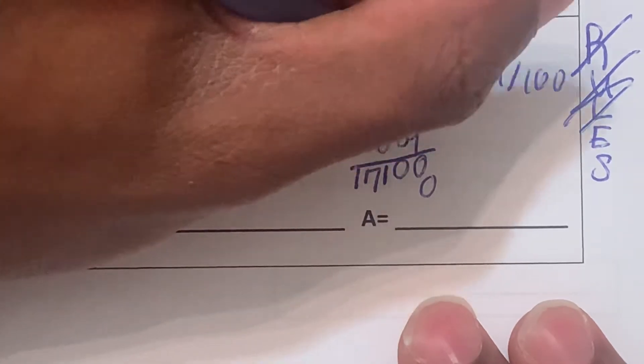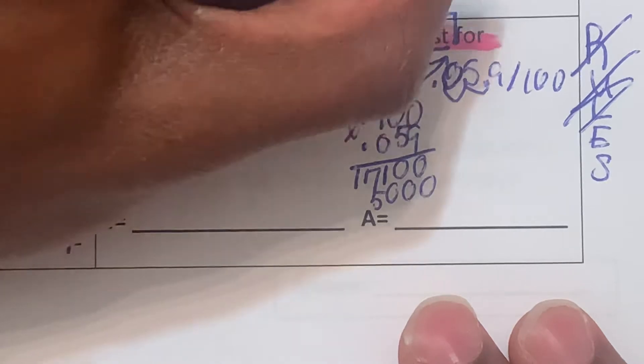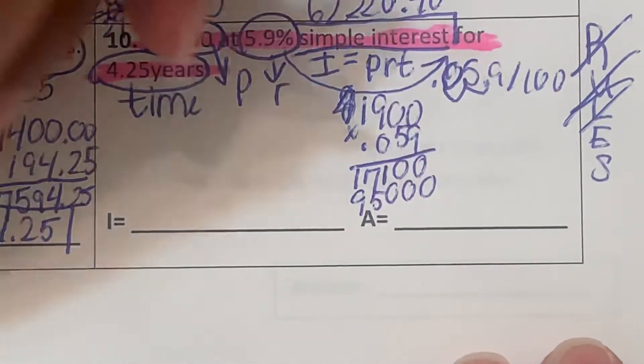9 times 0 is 0, 9 times 0 is 0, 9 times 0 is 0, 9 times 9 - those are numbers. 9 squared is 81, carry the 8. 9 times 1 is 9, plus 8 is 17. Put a 0 in the thousandth place. 5 times 0 is 0, 5 times 0 again is 0, 9 times 5 is 45, carry the 4. 5 times 1 is 5, plus 4 is going to be 9.